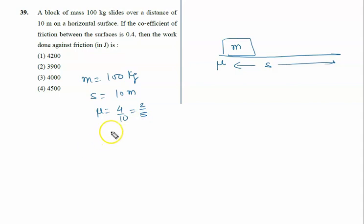Then the work done against friction: we know here that finally the block is stopping, which means all the work done by friction is used to stop it. So work done by friction is given by work equals force into displacement.